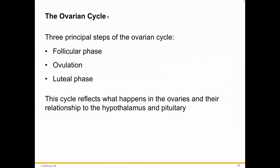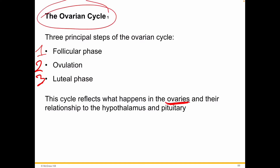The ovarian cycle has three parts. One is the follicular phase, two is ovulation, and three is the luteal phase. It's really talking about what's happening in the ovaries — that's why it's called the ovarian cycle.